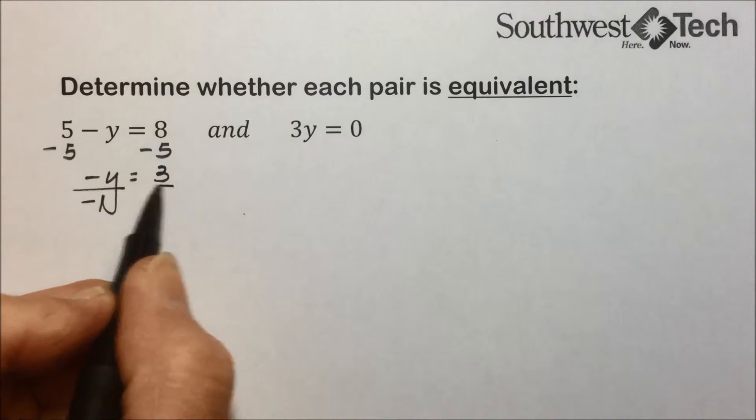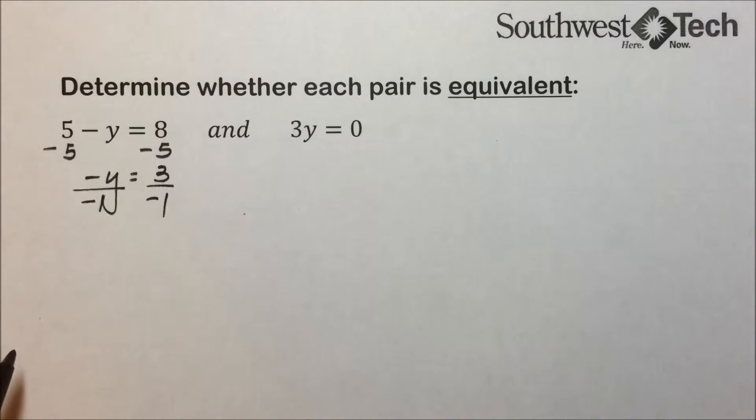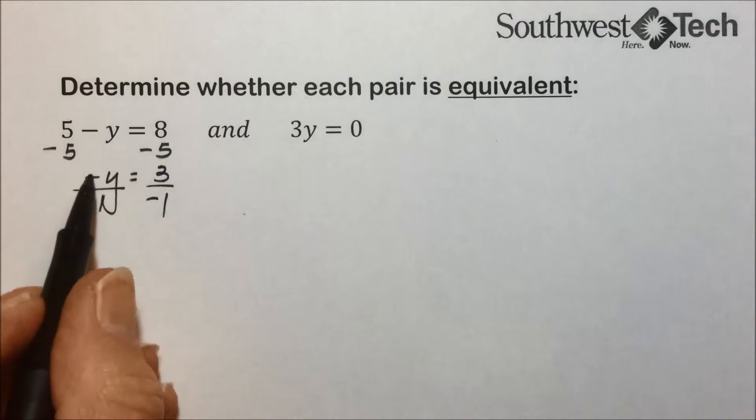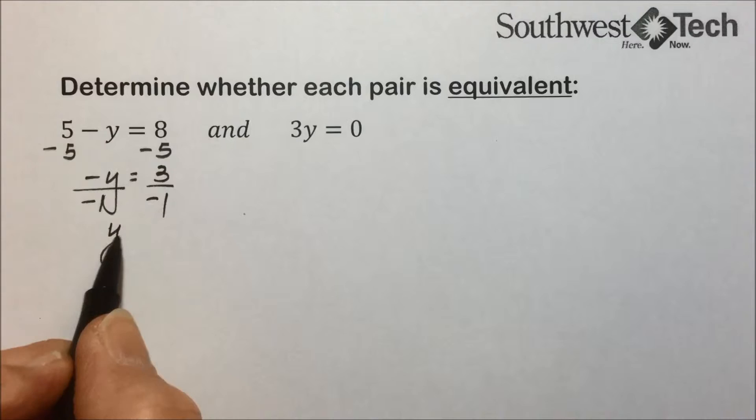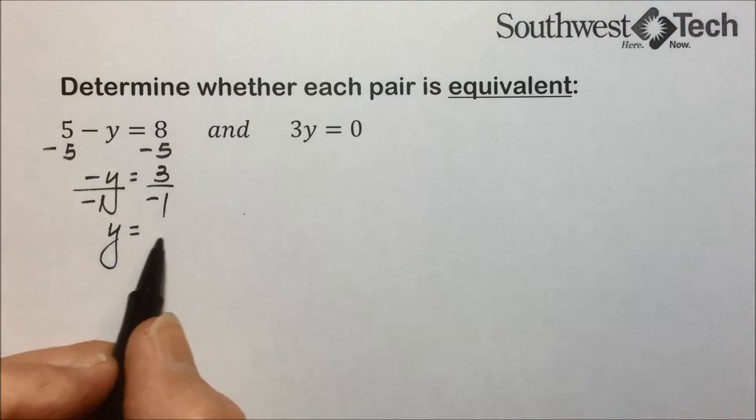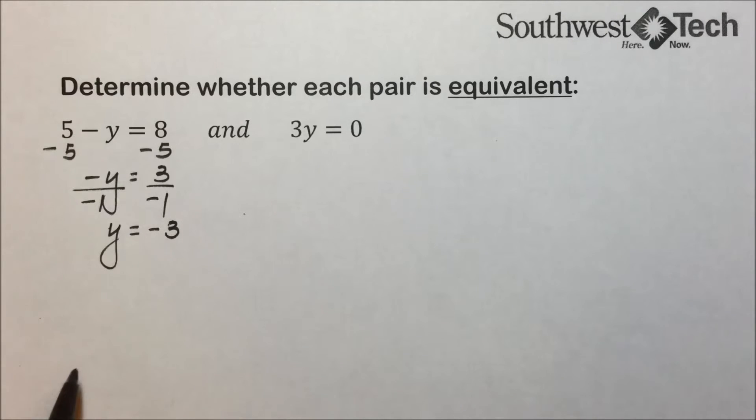Dividing both sides by negative 1, we always want to solve for a positive variable. What we do to one side we have to do to the other. Negatives cancel out, leaving y. And a positive divided by a negative is a negative. 3 divided by 1 leaves negative 3.